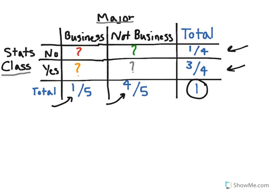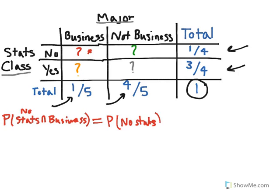To calculate the numbers in the middle, for example this red one here, we're going to assume these are independent events, meaning one doesn't affect the other. If we look at the probability that someone has not taken a stats class before and that they're a business major, we can multiply the probability of each event: the probability of no stats class before times the probability that they're a business major.